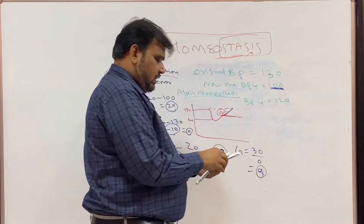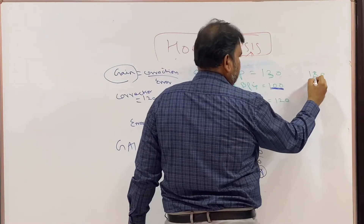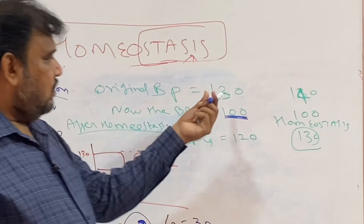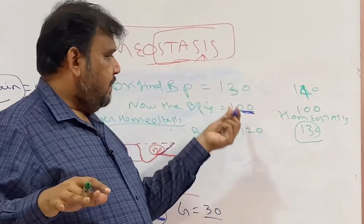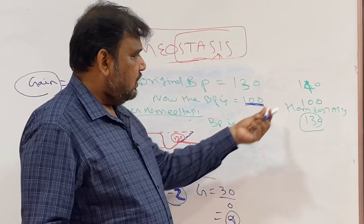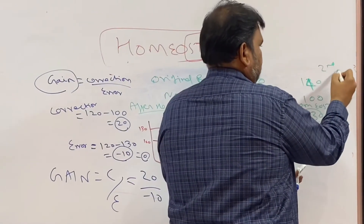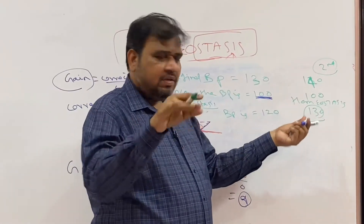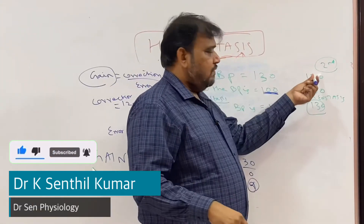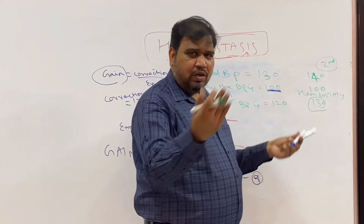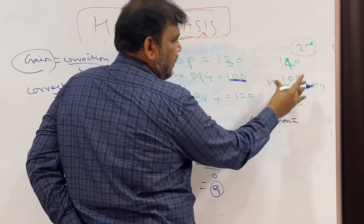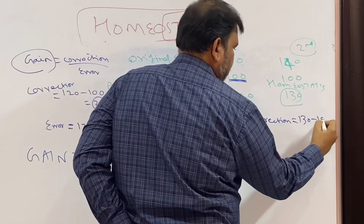Let me take another scenario. Imagine the normal BP of the subject is 140. Because of some disturbance, the BP dropped to 100. After homeostasis, the BP came back to 130. Correction equals the final BP minus the disturbed BP: 130 minus 100, which equals 30.